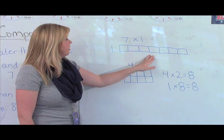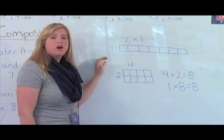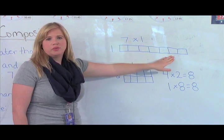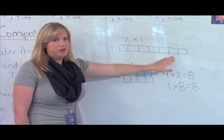the only array we can make is seven times one or one times seven. So it's seven boxes going straight in a row. That tells us it is a prime number.